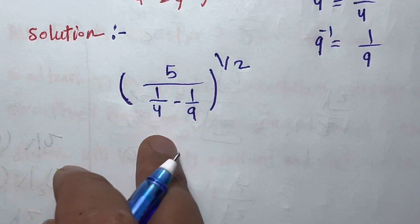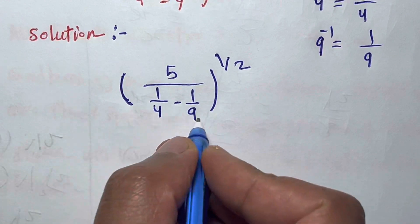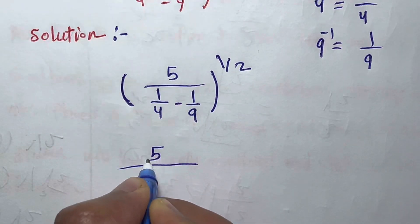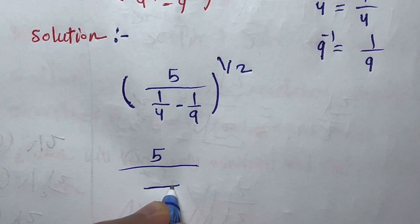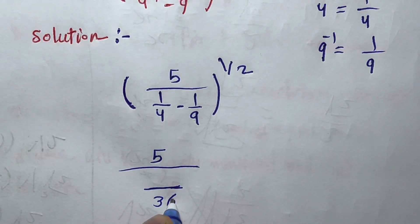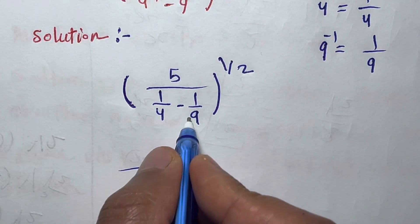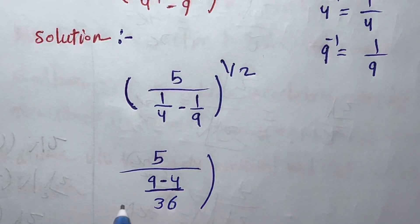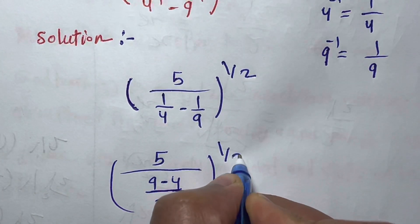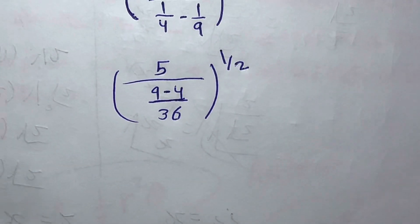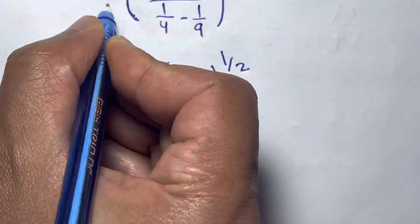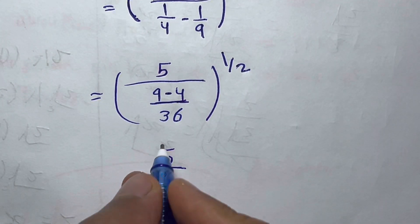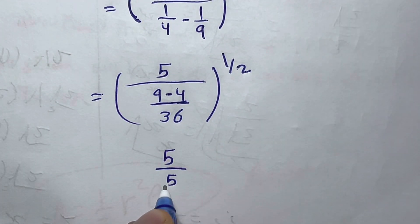Next, we find the common denominator for the denominator part. Nine times four gives 36. So we get nine over 36 minus four over 36, which equals five over 36. The expression becomes five over five over 36, raised to the power of one over two.